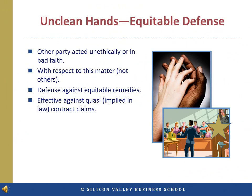Unclean hands is an equitable defense in which the defendant argues that the plaintiff is not entitled to obtain an equitable remedy on account of the fact that the plaintiff is acting unethically or has acted in bad faith with respect to the subject matter of the complaint — that is, acted with unclean hands. The defendant has the burden of proof to show the plaintiff is not acting in good faith. The doctrine is often stated as: those seeking equity must do equity, or equity must come with clean hands. A defendant's unclean hands can also be claimed and proven by the plaintiff to claim other equitable remedies and prevent the defendant from asserting equitable affirmative defenses. In other words, unclean hands can be used offensively by the plaintiff as well as defensively by the defendant. For more information on equitable defenses, see the slideshow on remedies.